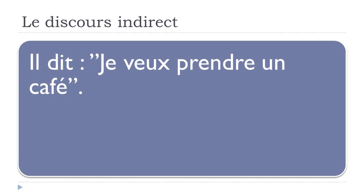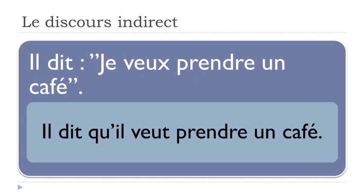If you have a look at a sentence like this: il dit — dire is to say, so he says — je veux prendre un café. Je veux: I want, vouloir is to want. Prendre is to take, un café is a coffee. If you want to transform this sentence it will be a bit different. In the first sentence it was quite simple because you had il and elle, but here you've got je veux and you need to transform it.